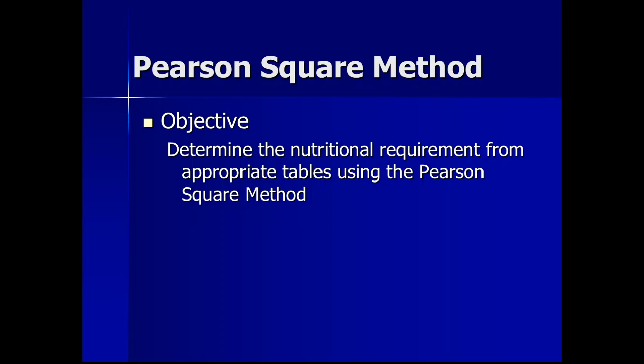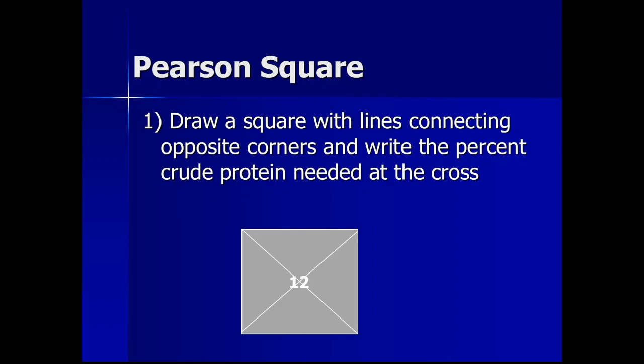A major limitation of the Pearson square method is that you cannot balance multiple nutrients like energy, protein, calcium, and phosphorus simultaneously. Also, we can easily calculate the quantity of feedstuff if we use only two feedstuffs, but when we have more than two feedstuffs, we have to do a lot more calculations, making the process lengthy. We will start with two feedstuffs and balance one nutrient.